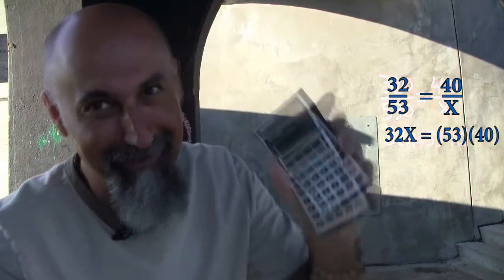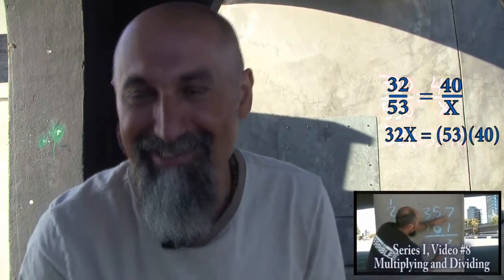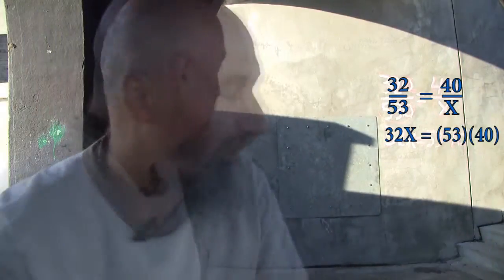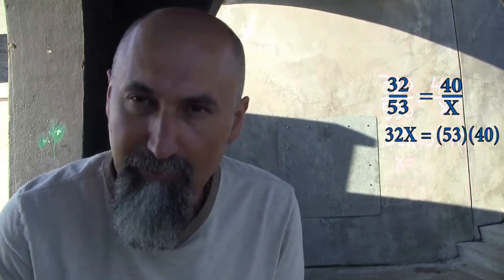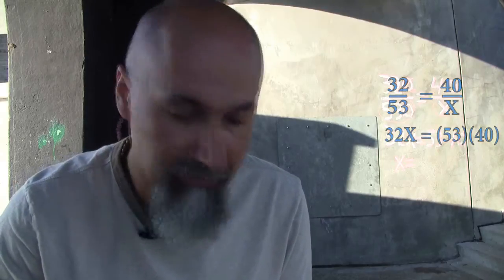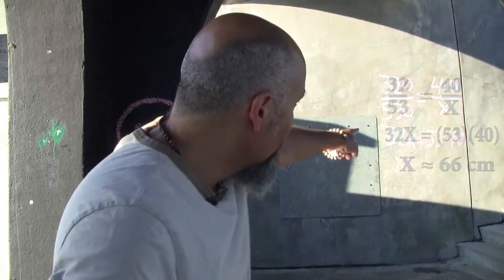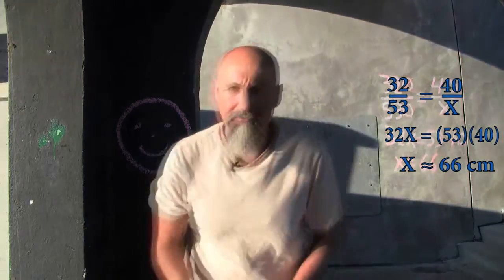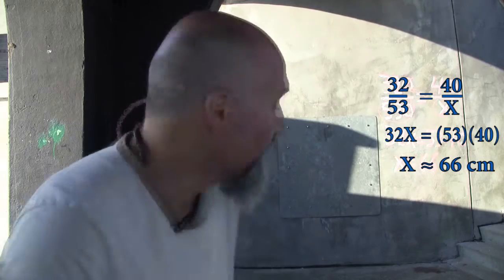32X equals 53 times 40. Now, 53 times 40 — I brought a little calculator because I'm limited on space, but you should know how to multiply, divide, add, and subtract; that's covered in series one. So 53 times 40 gives us 2,120. And 2,120 divided by 32 gives us 66.25 — that's the diameter of the circle we're going to draw. We round it down to 66, so the diameter of the back-wall circle is 66 centimeters.